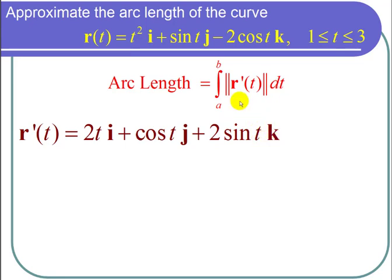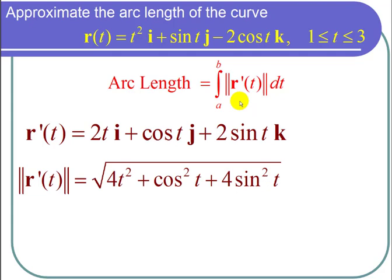And I take a magnitude by taking the square root of the sum of the squares to get the square root of 4t squared plus cosine squared of t plus 4 sine squared of t.